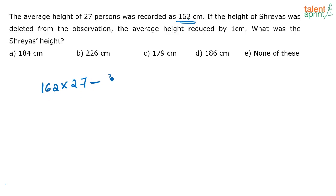From this total height, the height of Shreya has been removed. Now the average height is reducing by 1 cm. When this happens, what is the new average? When I reduce Shreya's height from the total, the new average is (162 × 27 - S) ÷ 26, because now there are only 26 people. This equals 162 - 1, which is 161.